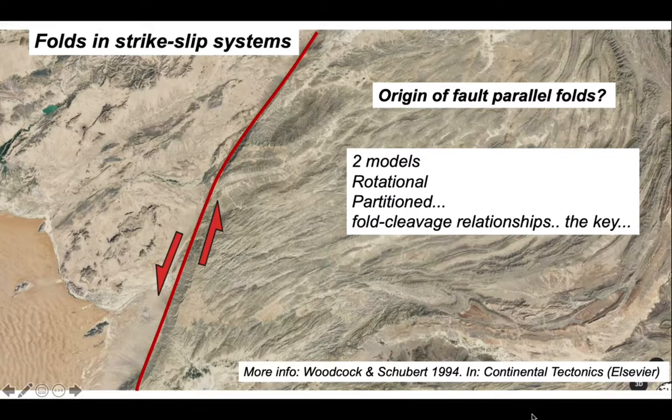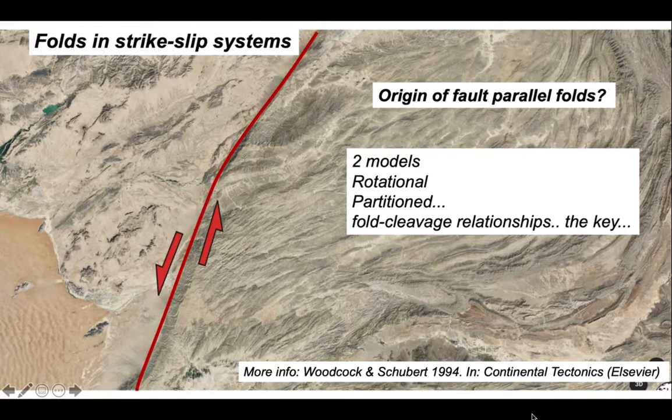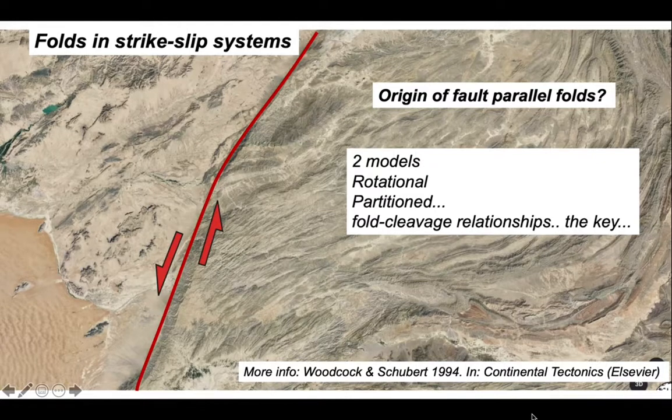In the alternative model, we explained this by partitioned transpression, where the oblique convergence is resolved into an ideal strike-slip component and compression perpendicular to the fault trace. In testing between these two models, we can use the relationship between the bedding-cleavage intersection and the fold to see whether the folds are transected or behave in a conventional manner. So with some simple field measurements, we can resolve this tectonic problem.